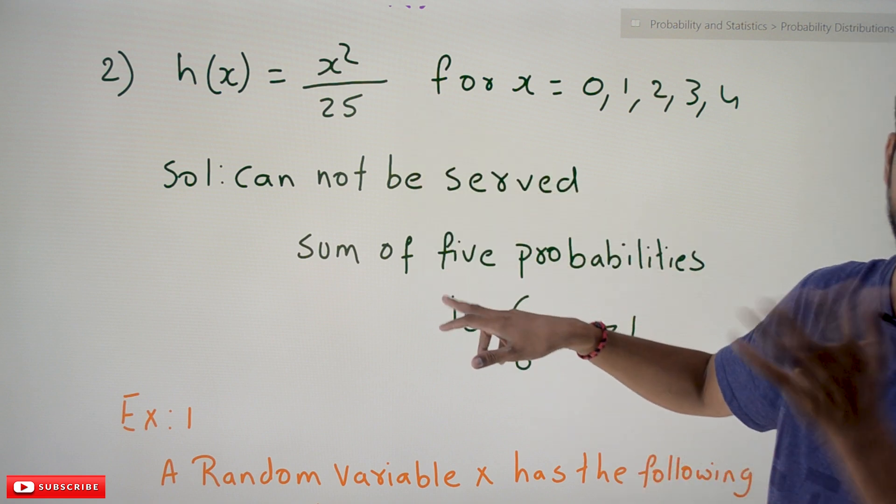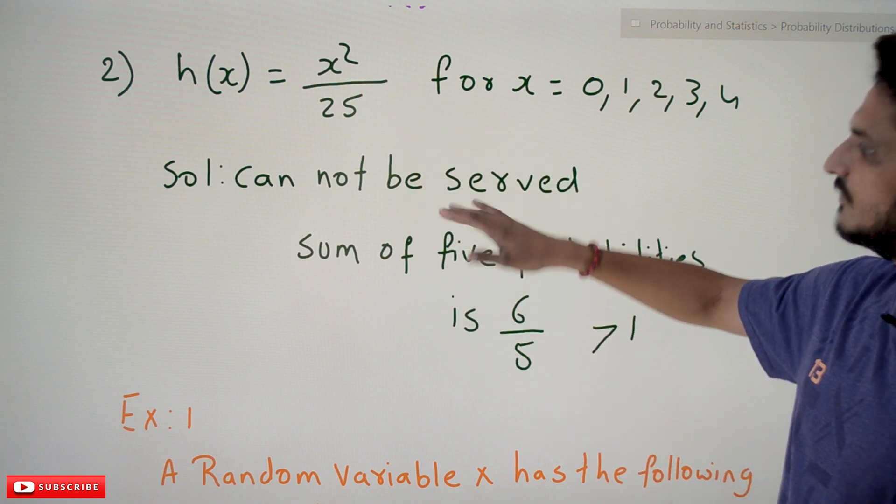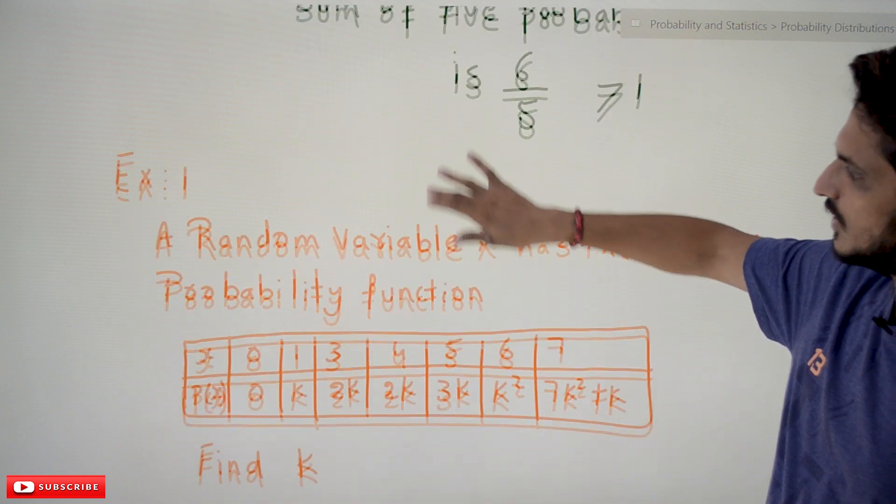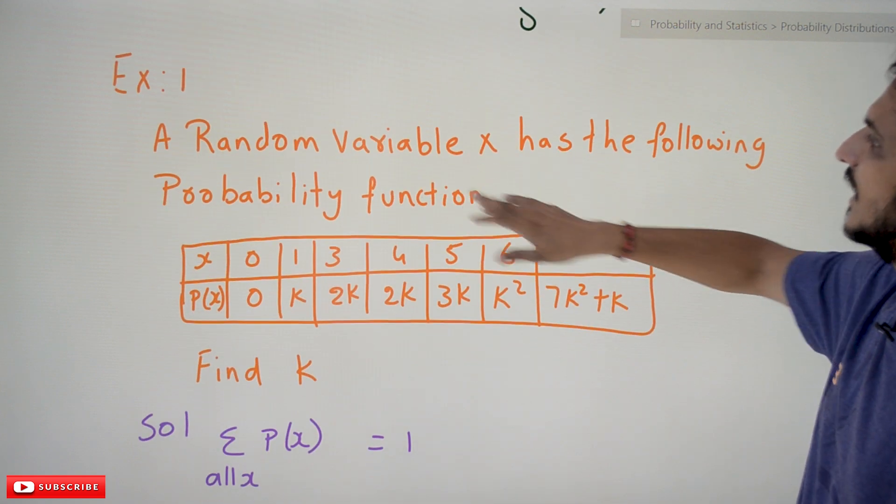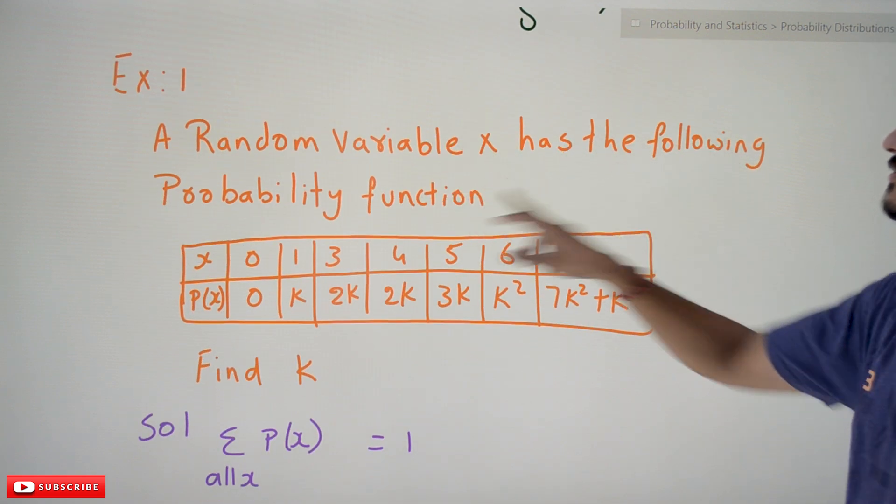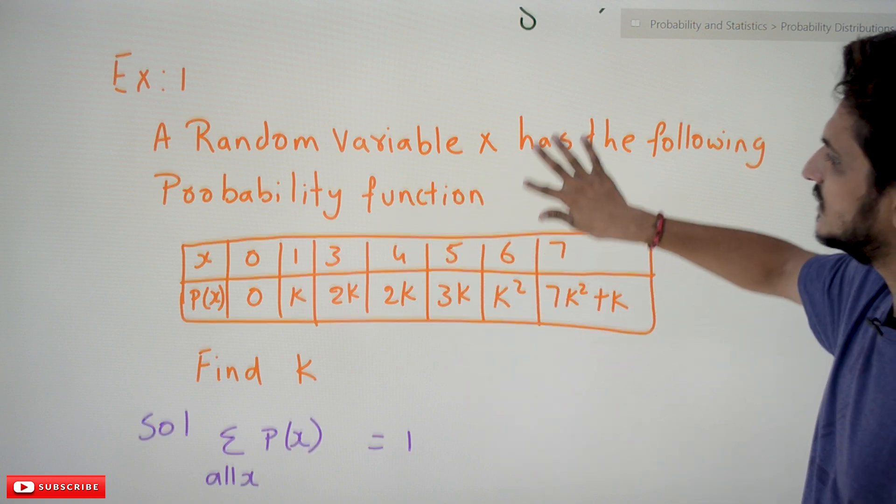So this function cannot be served as a probability mass function. This is how we identify that. We do one more example for better understanding. A random variable X has the following probability function, probability mass function. This is the distribution they have provided.